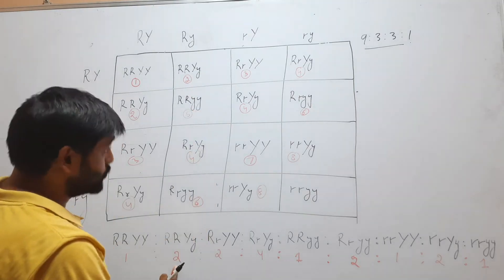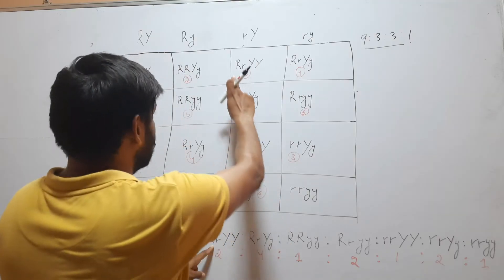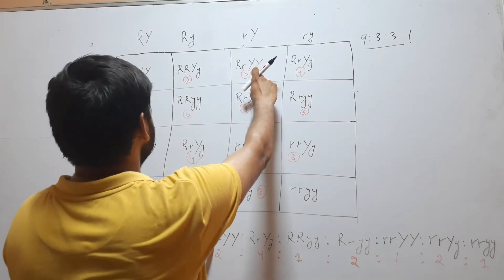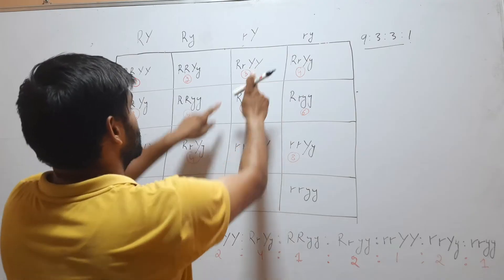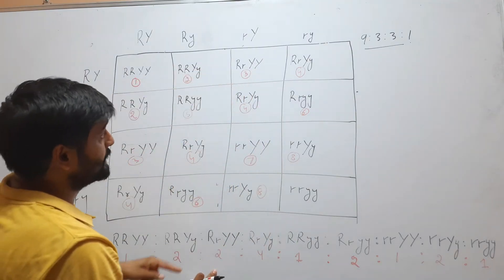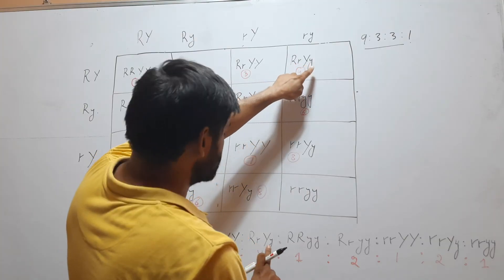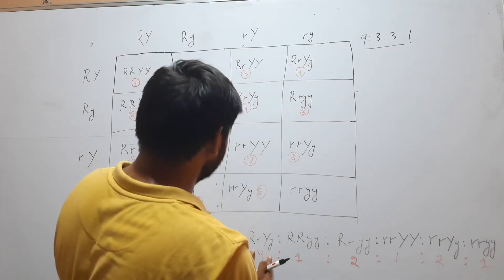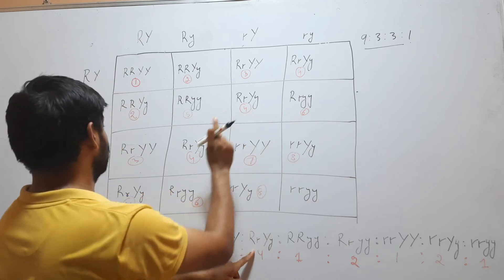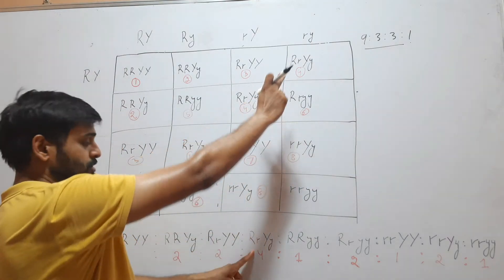The next combination is RrYY. It comes 2 times, here and here, so we will write 2. The next combination is RrYy. This one comes here, there, that one, and this one, so it comes 4 times. We will write 4.